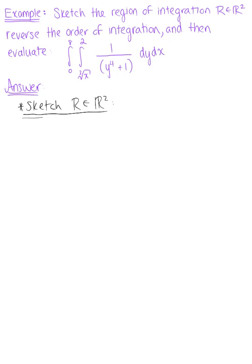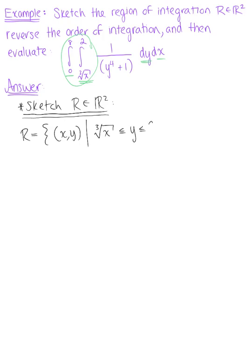To identify what R is, we want to think about the bounds of our double integral. The inner integral is with respect to y, and the outer integral is with respect to x. So we can define R as the set of all ordered pairs (x, y) such that y is greater than or equal to the cubic root of x and less than or equal to 2, and x is greater than or equal to 0 and less than or equal to 8. This is the given region of integration, which we will now use to sketch our graph.